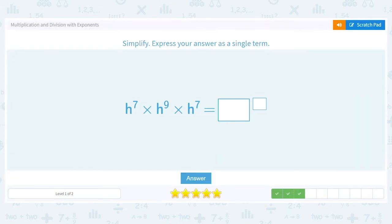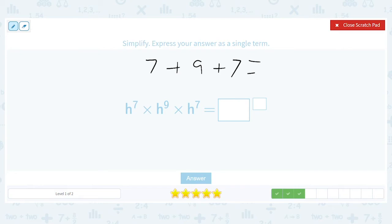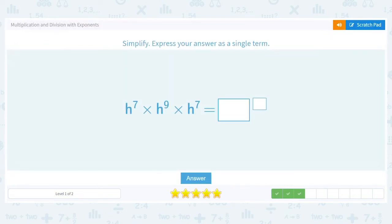How about this? Well, we've got h to the seventh times h to the ninth times h to the seventh. So we have seven plus nine plus seven, which will give you seven plus nine is sixteen. Sixteen plus seven is twenty-three. So we'll end up with h to the twenty-third.